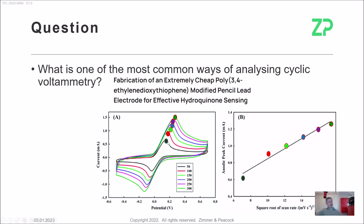The Randles-Sevcik equation says that the peak height due to the diffusion of a material is happening in the liquid phase. If your peak height is proportional to the square root of scan rate, then you have a diffusion-controlled process. This is a very common analysis of peak height versus the square root of scan rate presented in the literature.